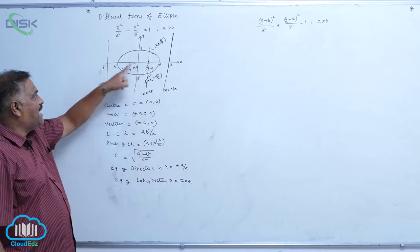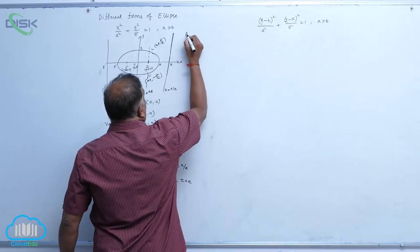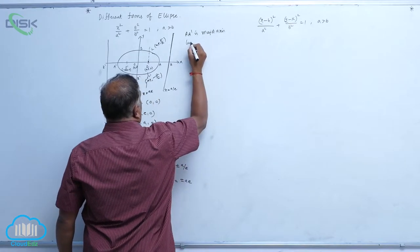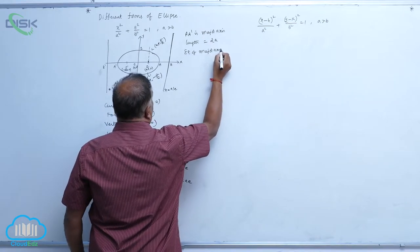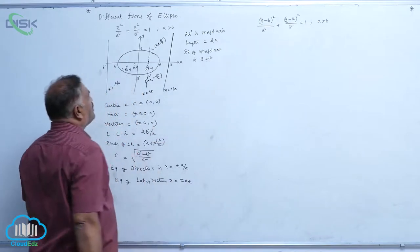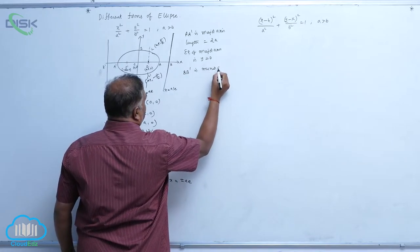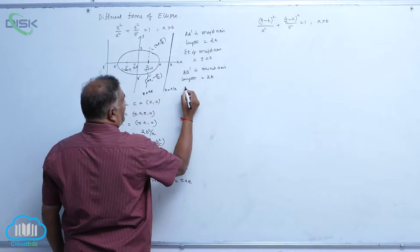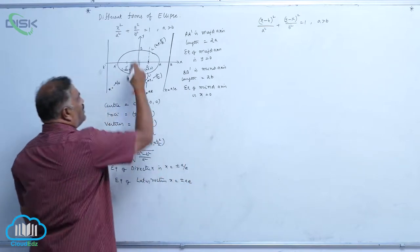AA' is the major axis. Its length is 2a and its equation is y = 0, which is the x-axis. BB' is the minor axis. Its length is 2b and its equation is x = 0, which is the y-axis.